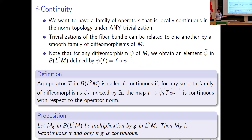I want this to work under any local trivialization. The key factor is that if I want to go from one local trivialization to another, they're going to differ by a conjugation of diffeomorphisms. It's no coincidence that in the previous example I was conjugating by a family of diffeomorphisms. So I'll make the clearest definition: an operator is F-continuous if for any smooth family of diffeomorphisms indexed by ℝ, the map given by conjugation by the diffeomorphism is continuous in the operator norm.